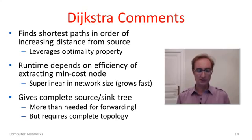And finally, I'll note that it gives us the complete source tree or sink tree, depending on which way you run it. This is actually more than we need for forwarding. Each node just needs to know the next hop for all particular destinations. So we have more than we need for forwarding. We can use it. That's great. To get this, of course, we needed to know the complete topology. So that's going to be an issue we'll have to address in routing. Okay. Now that we know Dijkstra's algorithm, I think we can keep moving on and look at other routing algorithms. So I'll go back to the numbers.